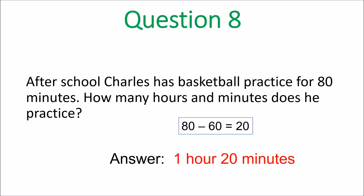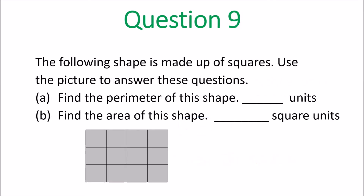We're nearly done — two more questions. Question 9: the shape is made up of squares. Find the perimeter — perimeter means the distance all around. If you count all around you get 14 units. Now find the area: count the squares on the inside. That gives you 12 squares, so the area is 12 square units.